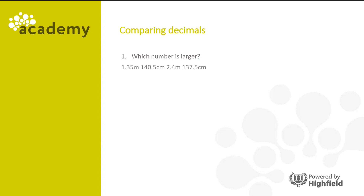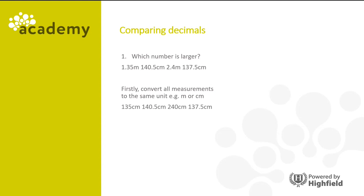Which number is larger: 1.35 metres, 140.5 centimetres, 2.4 metres or 137.5 centimetres? Firstly we need to convert all measurements to the same unit, either metres or centimetres for example. So that gives us 135 centimetres, 140.5 centimetres, 240 centimetres and 137.5 centimetres. The ones that were in metres we multiplied by 100 to get centimetres.